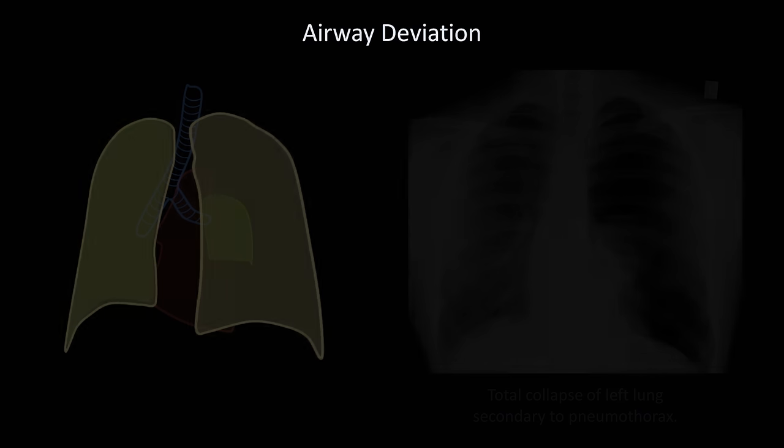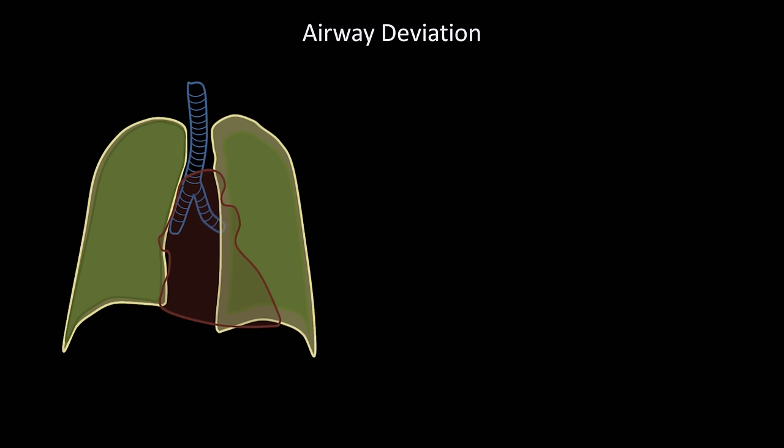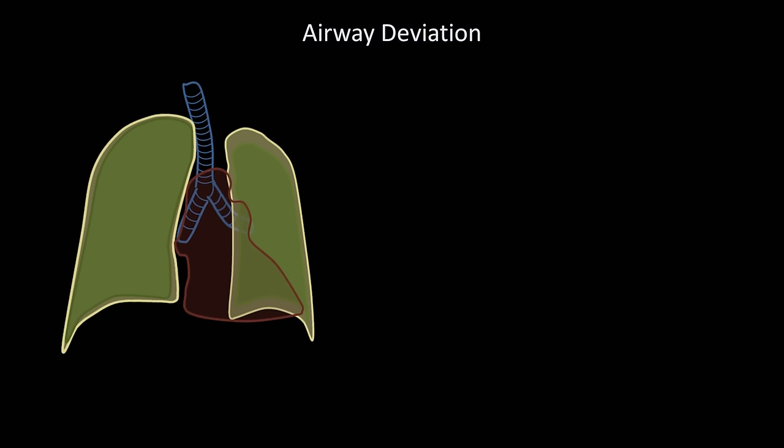For another example, imagine a primary fibrotic process happening only in the left lung. Fibrosis leads to gradual contraction of the lung and reduced lung volumes. As this process worsens, it will begin to contract the pleura as well, shifting all of the other structures towards the affected side.